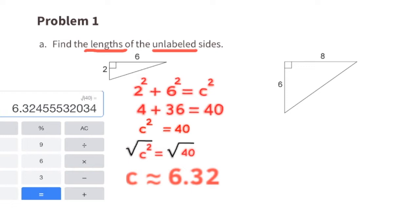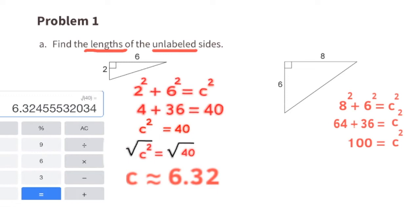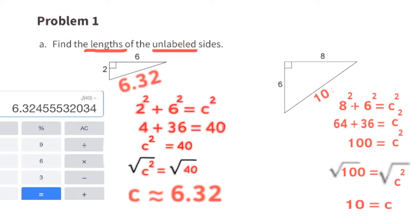For the next triangle, we use 8 squared plus 6 squared equals c squared. Eight squared is 64 and six squared is 36. 64 plus 36 equals 100, so c squared equals 100. Since the square root of 100 is 10, the missing side length is 10 units. So the first triangle's missing side is approximately 6.32 units and the second triangle's is 10 units.